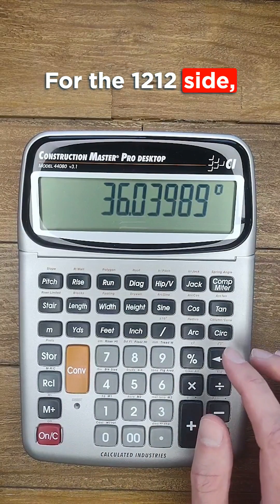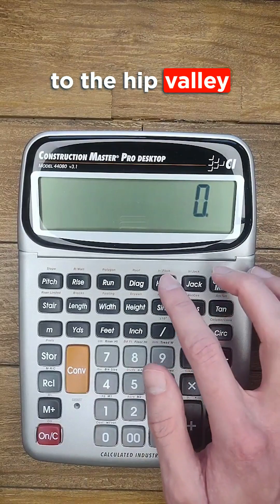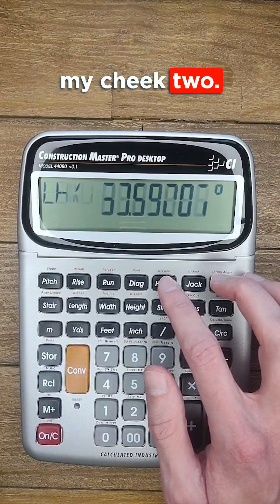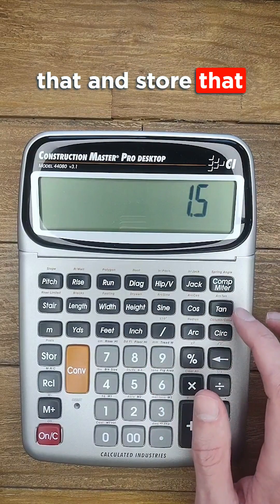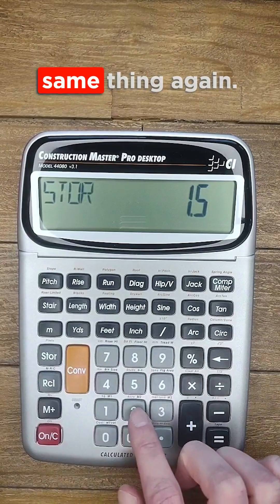For the 12-12 side I need to go back to the hip valley button and find my cheek 2. Now I'm going to take the tangent of that and store that in memory 2 and then it's the same thing again.